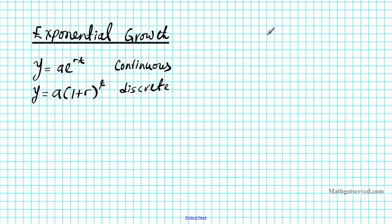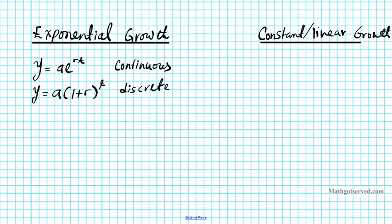Now, how about constant or linear growth? For constant or linear growth, we have just a basic linear equation — normally y equals mx plus b — but we're going to use a different set of letters here: y equals at plus b. So this is constant or linear growth.